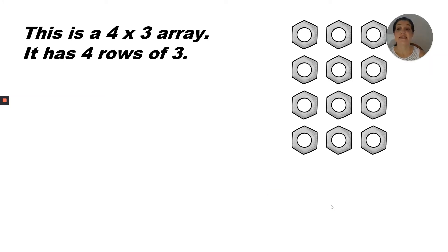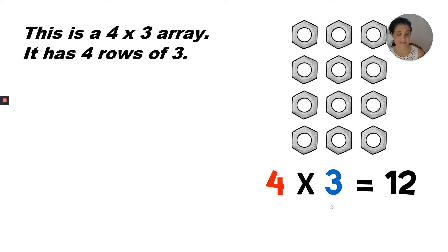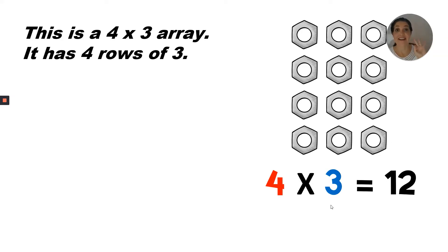This is a four by three array. It has four rows of three. The multiplication equation would be four times three equals twelve. I know that because I can count by three four times. Three, six, nine, twelve.